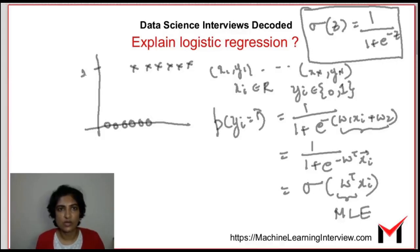So let's say this is y equals 1 and logistic regression defines this pdf which is smoothly going from 0 to 1.